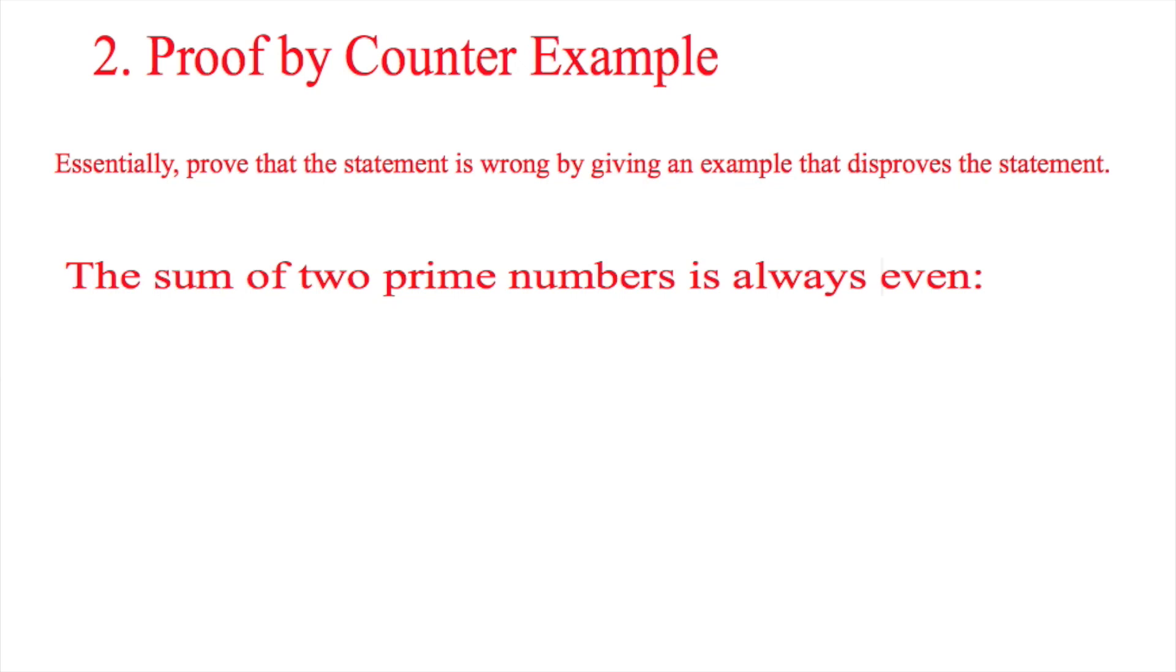Now at first this may look like this is true, because if you think about many prime numbers like 5 and 7, they equal 12. This is normally even.